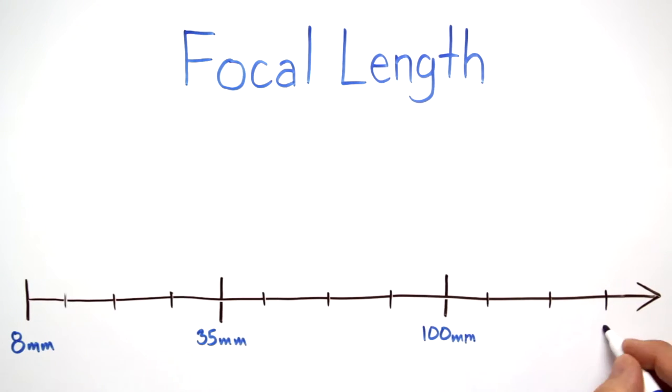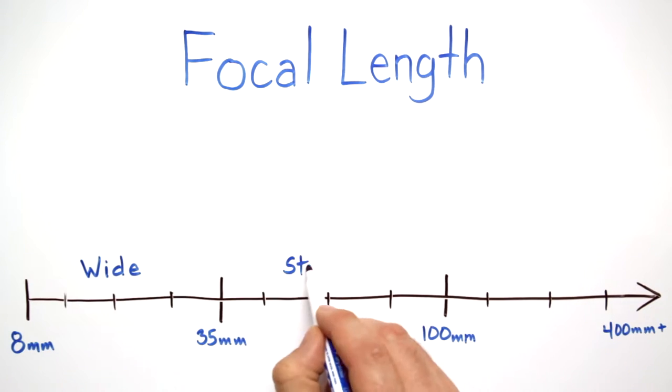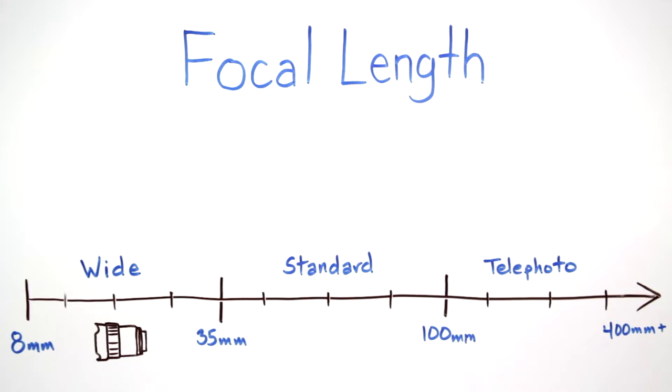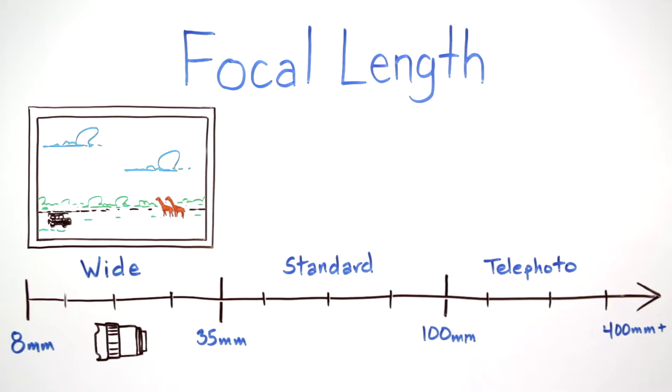Lenses fall into three broad categories: Wide, Standard, and Telephoto. Wide lenses are, well, wide. They're great at capturing those large group photos and expansive landscapes.